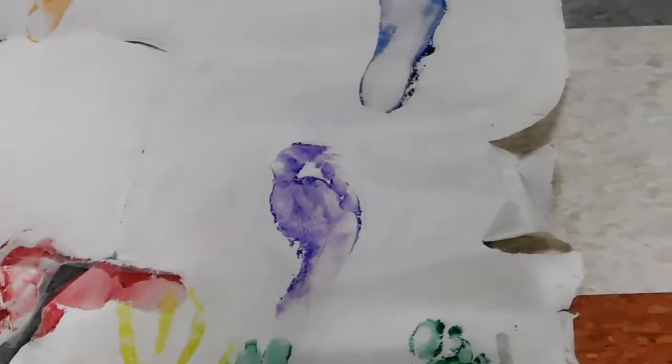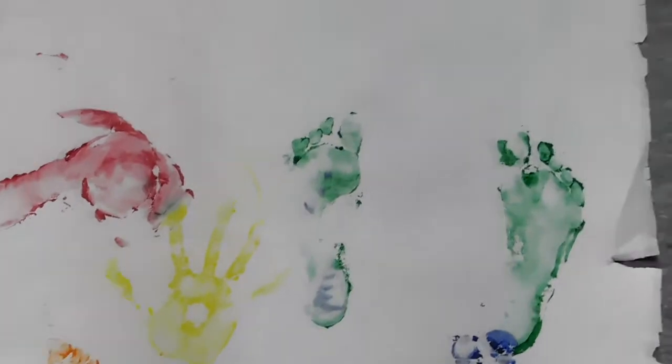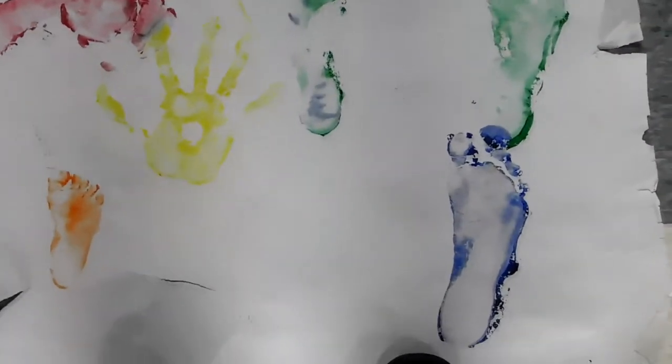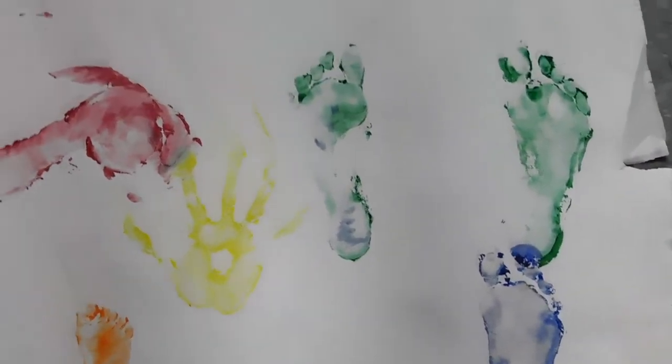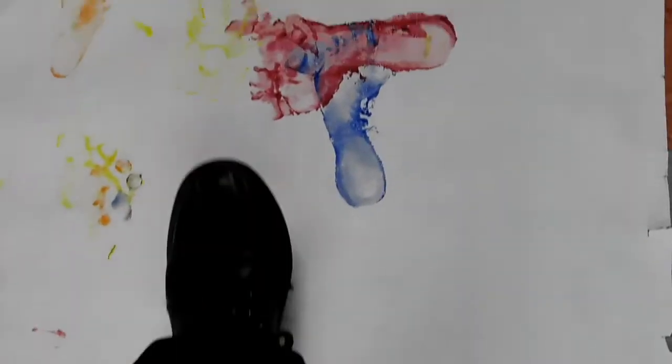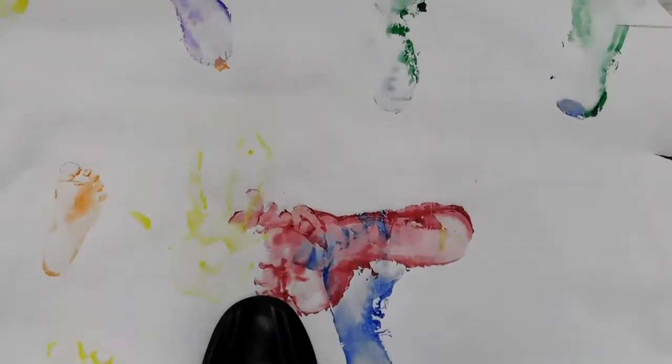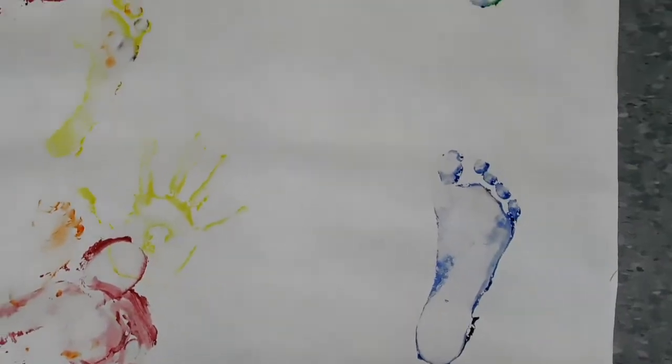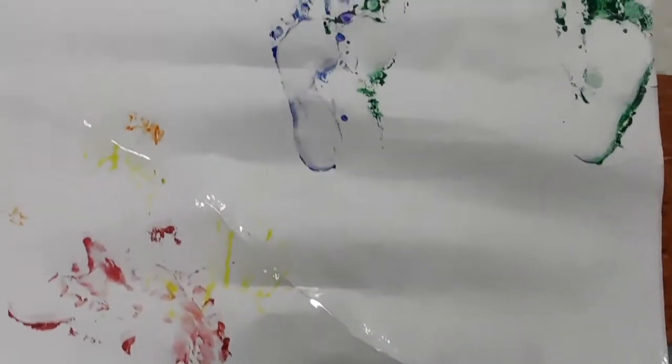I'm going to go through the colors. So let's start with blue. I'll try to go alphabetical here. So there's a footprint, there's another footprint, there's another one, and another one, and another one.